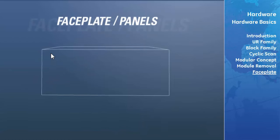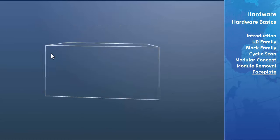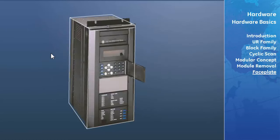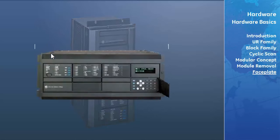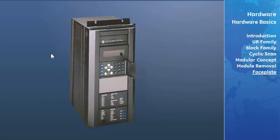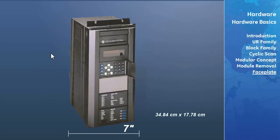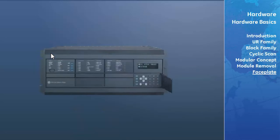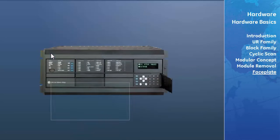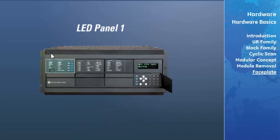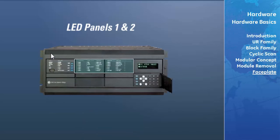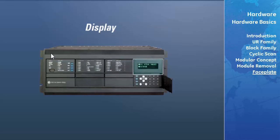The universal relay comes in both a horizontal and vertical mounting configuration. The horizontal relay measures 19 inches across by 7 inches high. The vertical relay is three-quarters the size of the horizontal mount, at 7 inches across and 13.72 inches high. The front of the universal relay consists of a dedicated LED panel, two additional programmable LED panels, a 2-line VFD display, and a keypad.